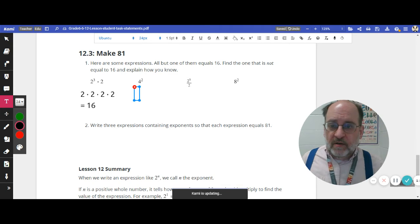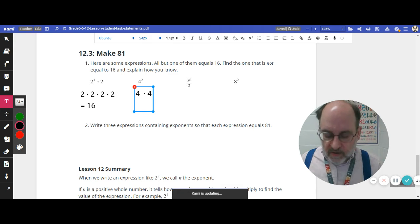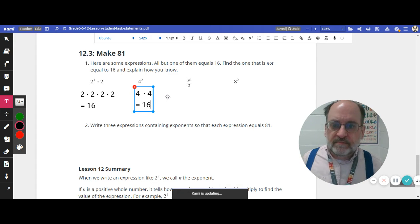How about this one? 4 squared. So remember that when we square something, we say we want to multiply it times itself. So finding the area of a square. 4 times 4 is 16. All right.